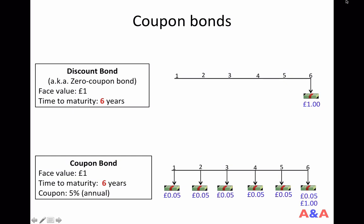In contrast, if you own a coupon bond — even if the face value and time to maturity are the same — you will receive intermediate coupon payments. Suppose the coupon rate is 5% and the coupon payment is annual. At maturity you will receive one pound (the face value), but in addition you will receive 0.05 pounds after every year — 5% of the face value.